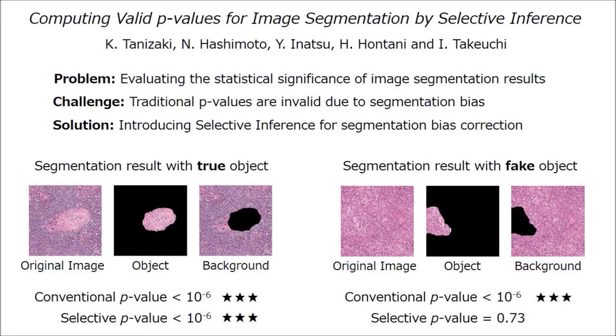However, the traditional test suggests that the segmentation result in the right is also statistically significant, which sounds a bit strange, because the right image seems to contain no actual segment.